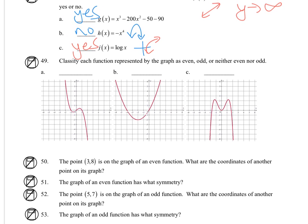For 49, even, odd, or neither. Even is y-axis symmetry and odd is origin. If I look at a, it has odd symmetry with respect to the origin. B has neither, and c is even. You can see the y-axis here, it's symmetrical on both sides.